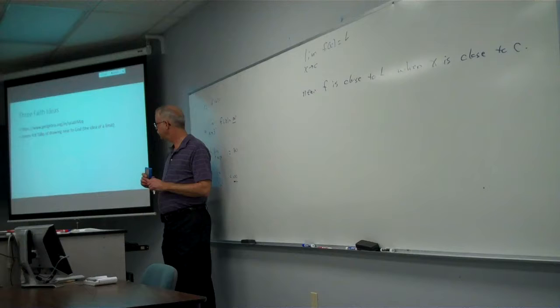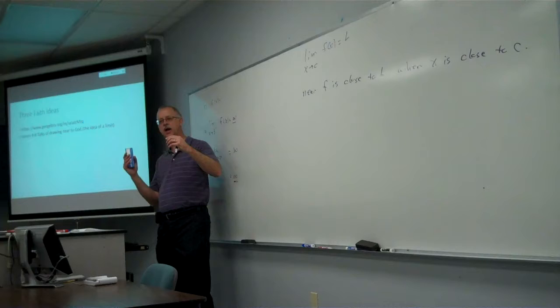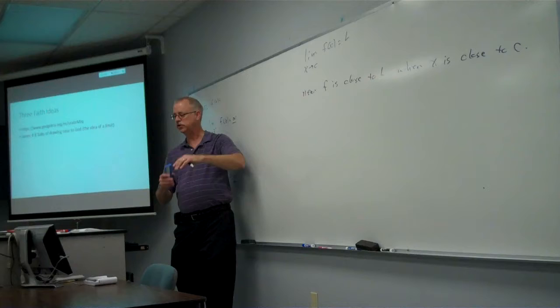But James 4 talks about drawing near to God. To me that's kind of the idea of the limit. X is getting close to C. What's F of X getting close to? Usually with the limit, C isn't moving. Just X is moving close to C. Although James talks about drawing near to God and he will draw near to you.